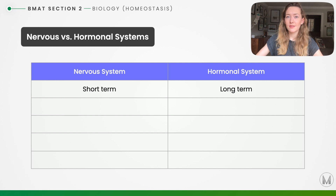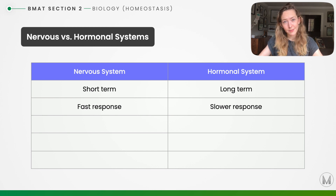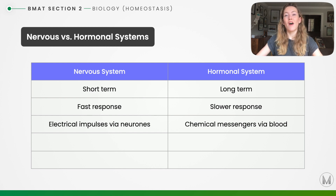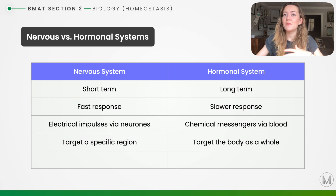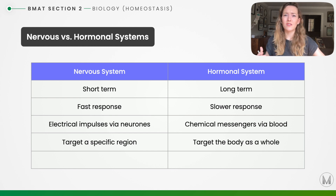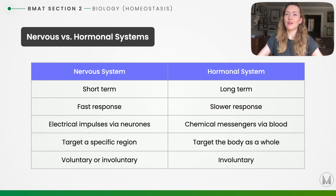Responses to stimulation of the nervous system are short term, whereas responses to the hormonal system are longer term. The nervous system has a faster response; the hormonal system has a slower response. Signals in the nervous system are sent through electrical impulses via neurons, whereas in the hormonal system signals are sent via chemical messengers such as hormones in the blood. The nervous system targets a specific region, whereas the hormonal system targets the body as a whole. The nervous system can be associated with both voluntary and involuntary reactions, whereas in the hormonal system all reactions are involuntary.